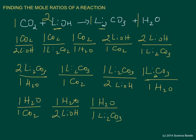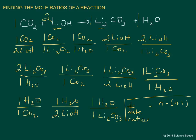So here you have all 12 mole ratios anticipated for this reaction. In case you're not familiar with how we determine that number, the formula is n times (n minus 1), where n represents the number of compounds. There are four compounds here, so it's 4 times 3, which gives us 12 mole ratios total — exactly what you see listed here.